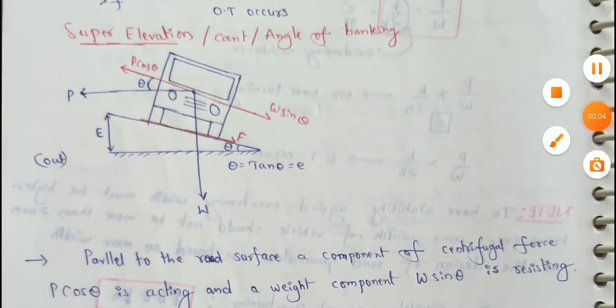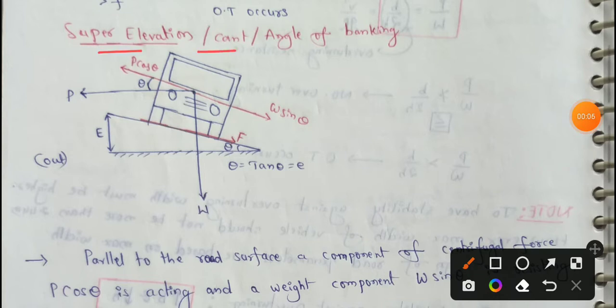Next topic, Super Elevation, also known as cant. That is the angle of banking. Simply banking.